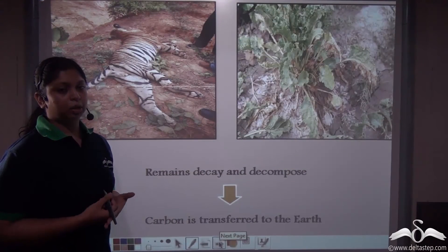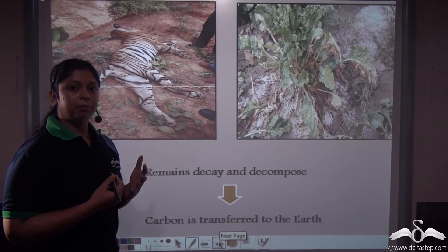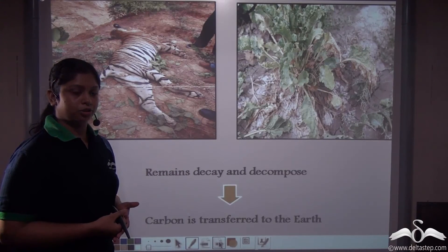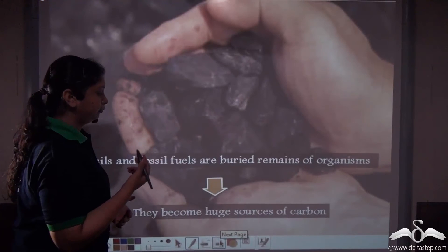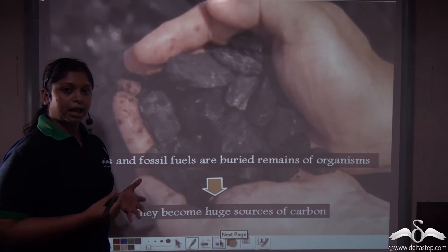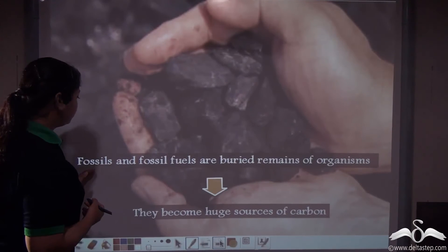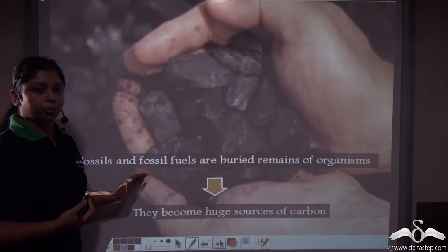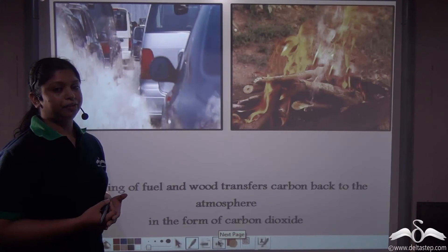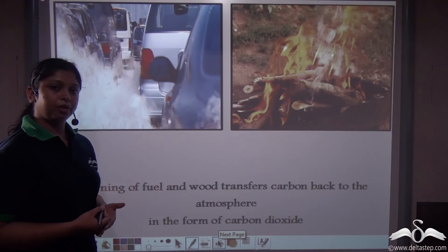Eventually, when all living organisms die, their dead bodies are decomposed and decayed, and the carbon content in their body is transferred back to the earth. This process is known as decomposition. Sometimes the decomposition process is not complete — some amount of dead remains are stored in the form of fossils. Fossils and fossil fuels are also a rich source of carbon. Upon burning of wood and fossil fuel, we return the carbon into the atmosphere in the form of carbon dioxide.